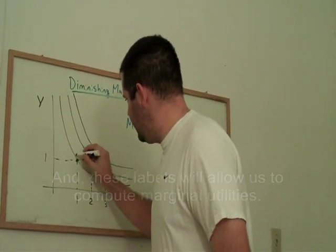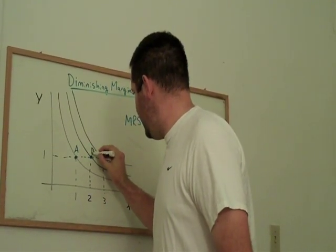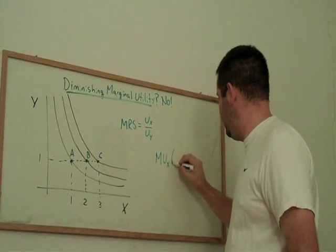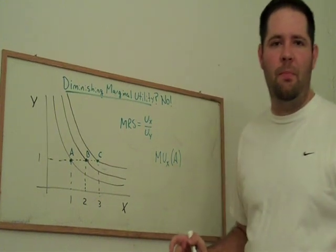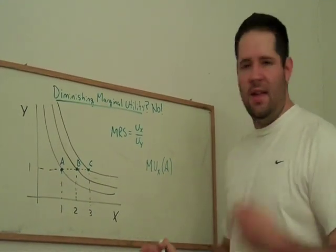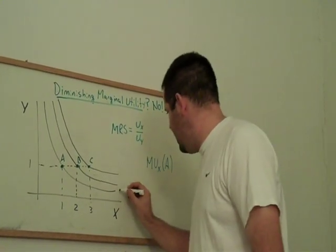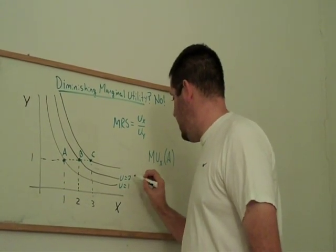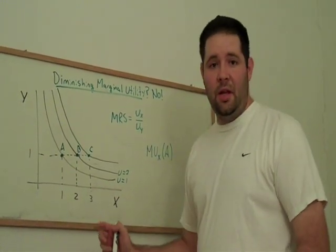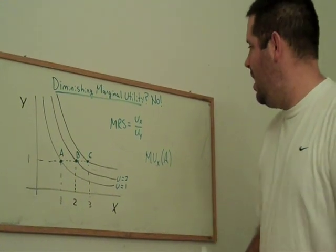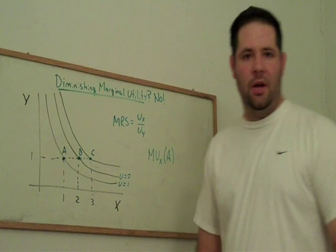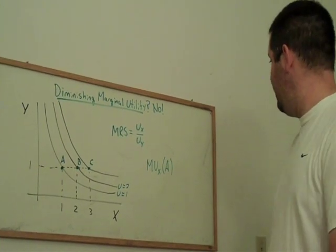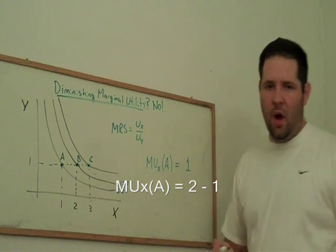Let's consider three points: point A, point B, and point C. I want to know the marginal utility of x at point A, or going from point A to point B. What I need for this is the labels on these indifference curves. For example, this might be utility equal to 1, and this would be utility equal to 2. That tells me all I need to determine the marginal utility of good x at bundle A — if I have one more unit of x, this individual gets one more util. So the marginal utility at bundle A is 1.